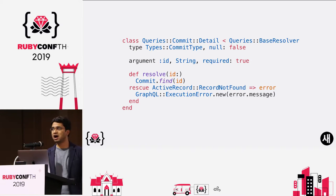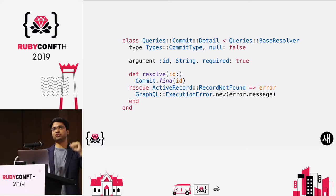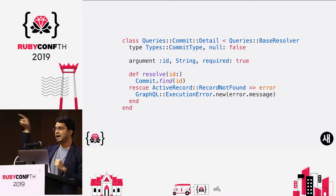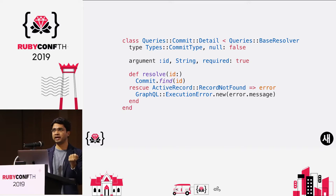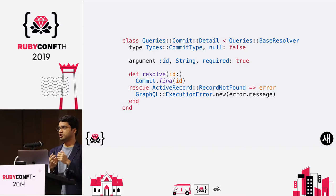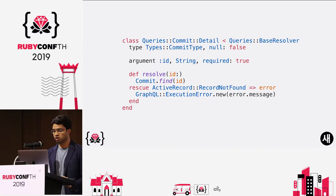Here is a fuller example of how a query looks. We define that we want information about a commit — the commit has ID, message, and other fields. It will accept an argument, which is an input parameter ID, and that is passed to resolve where you use the argument to find the record. You can also use context for user information, and the returned object is typecast to the specified type and returned as a response.